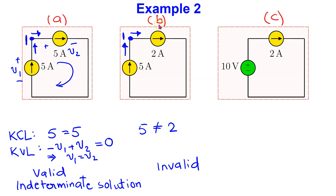For interconnection B, applying KCL to node one, we can see that KCL is in fact violated. Thus, we can immediately conclude that interconnection B is invalid.